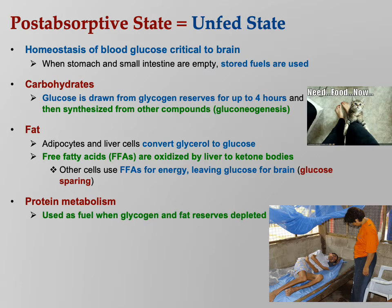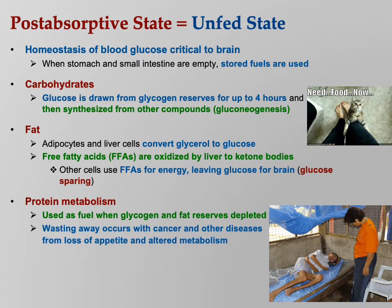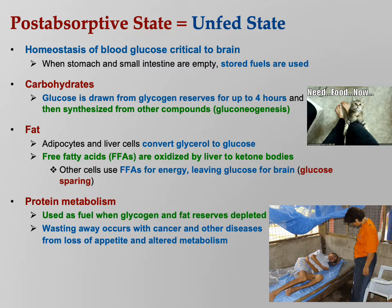For protein metabolism: the body uses this fuel only when glycogen and fat reserves are depleted. This is not a happy state of affairs. You're only going to use proteins for energy if you're literally starving to death. Wasting away occurs with cancer and other diseases — loss of appetite and altered metabolism are among the causes.